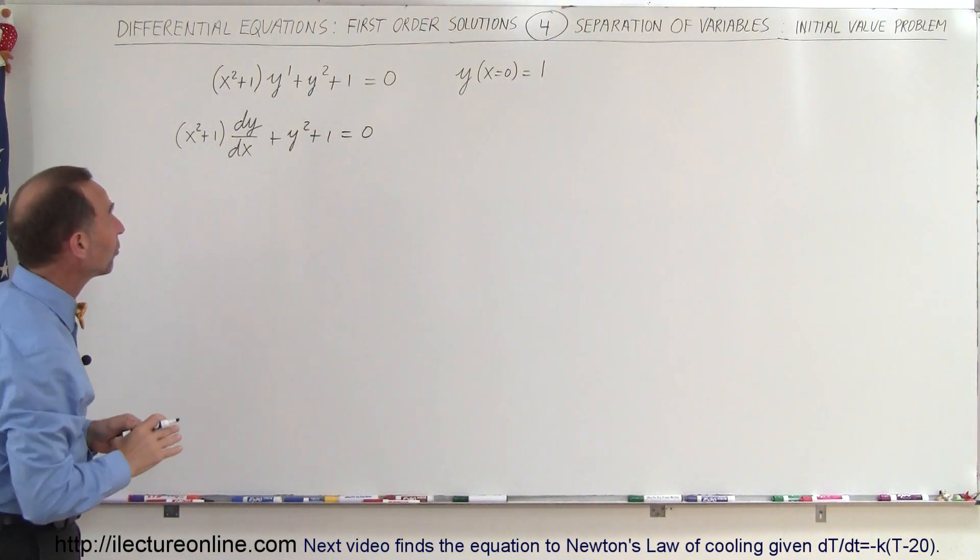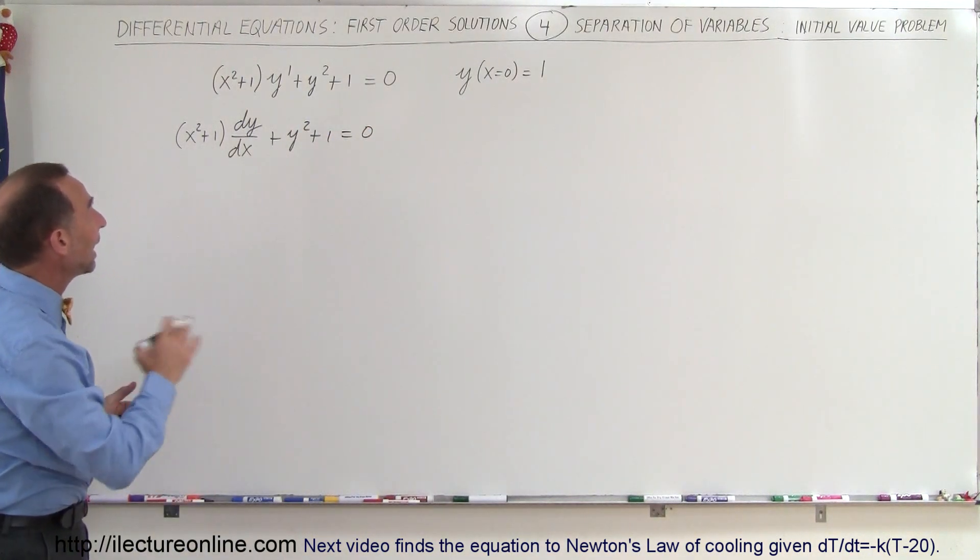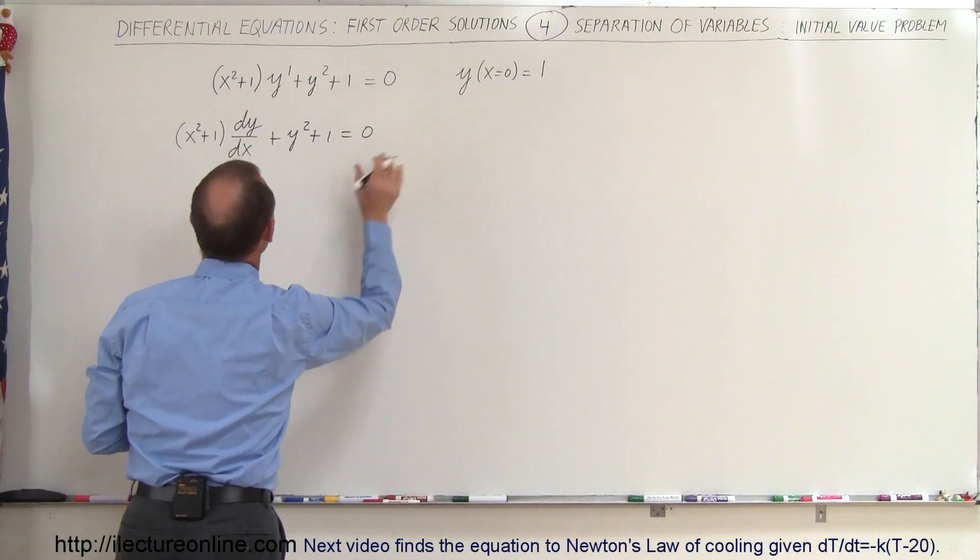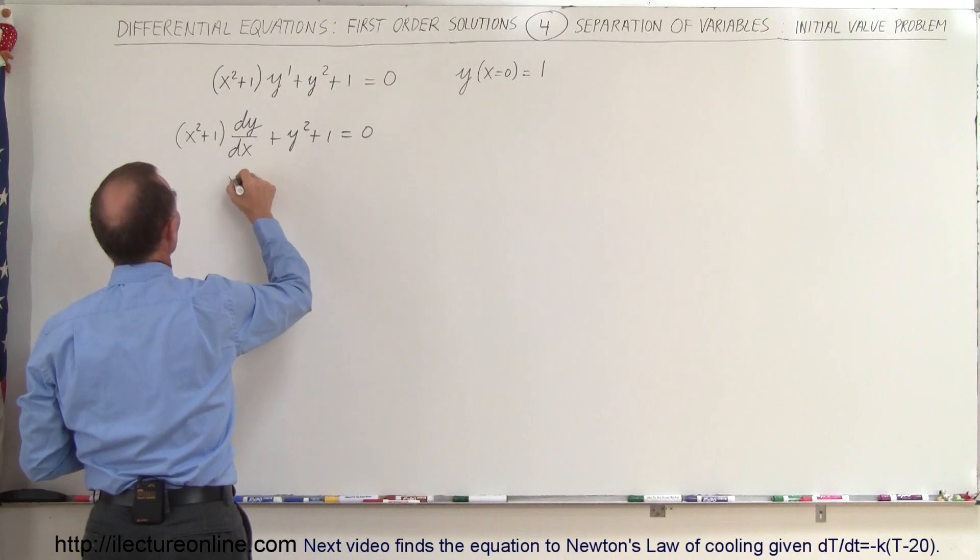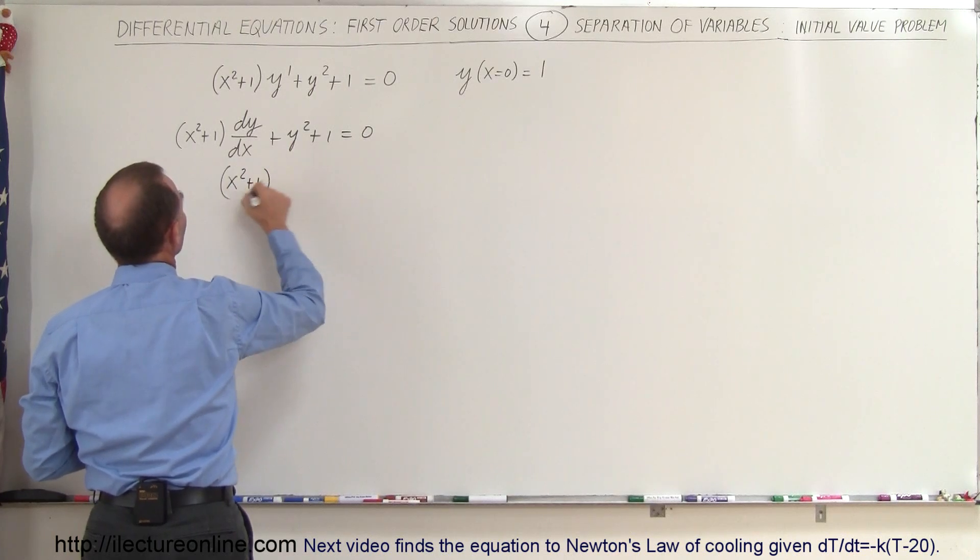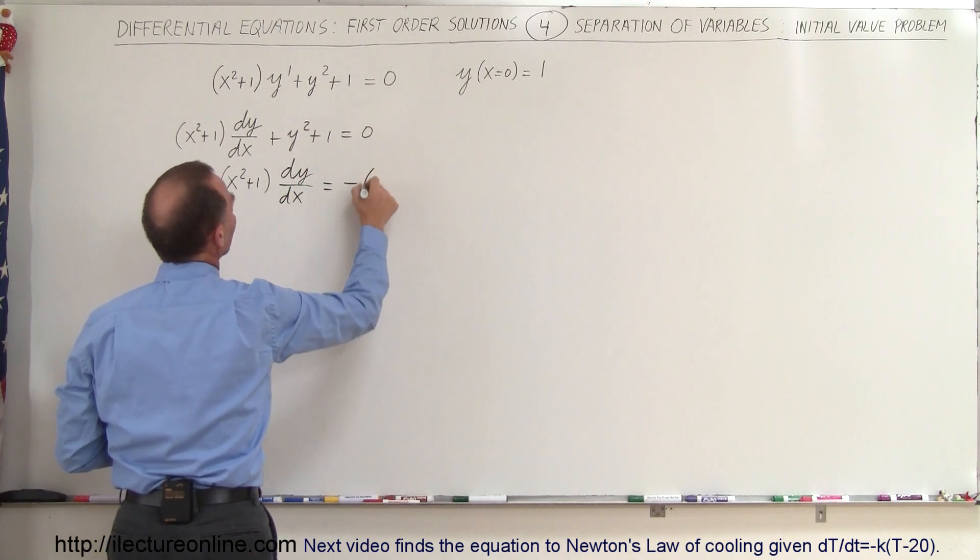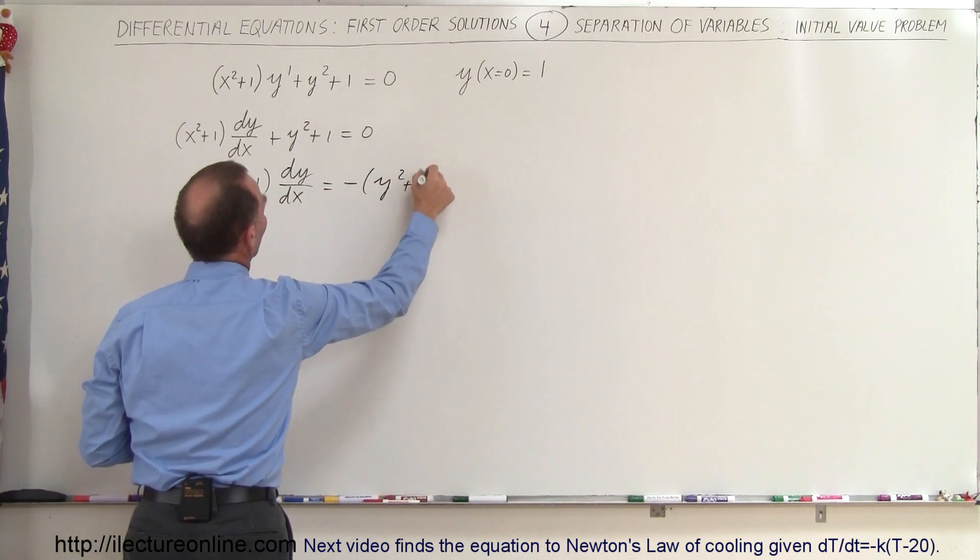Now of course we want to separate the variables, we want to put y's on one side, x's on the other side. The way to do that is to bring this to the other side, that means we have (x² + 1) dy/dx = -(y² + 1).